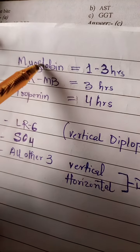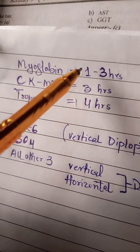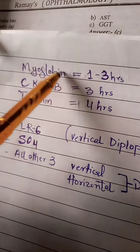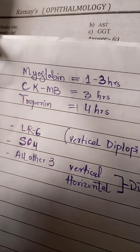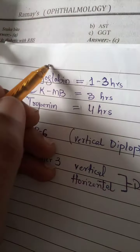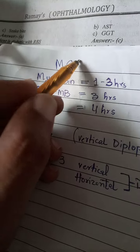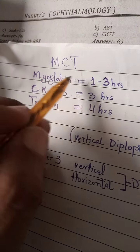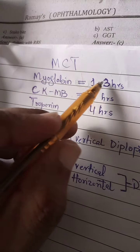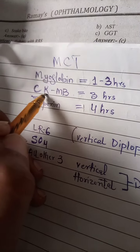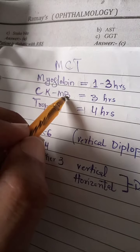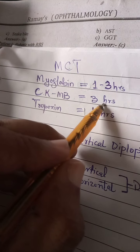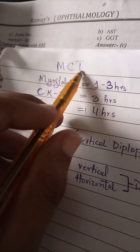We are going to look at the enzymes that are raised in myocardial infarction. We can memorize with the mnemonic MCT. M stands for myoglobin, which is raised one to three hours after infarction. C stands for CK-MB, which is raised after three hours after infarction.